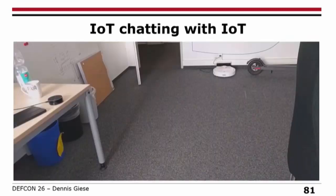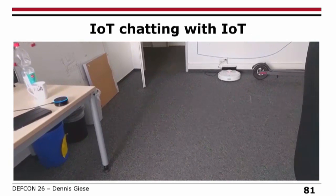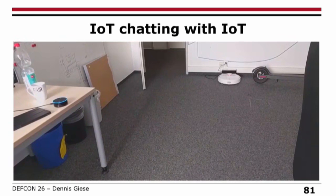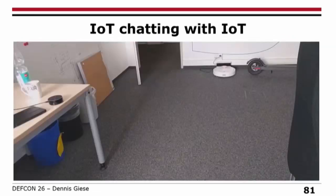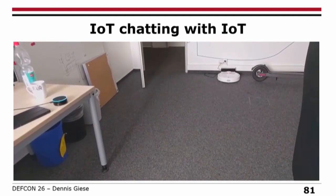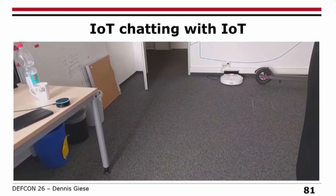The last example is a demo I wanted to do live, but I can't connect the vacuum cleaner to the Wi-Fi here, so here's a video. IoT can chat with IoT devices — on the left is Amazon Echo, on the right is the vacuum cleaner. You can see a speaker that drives around in your apartment and speaks to your IoT devices. Currently in Boston it's 21 degrees Celsius with mostly sunny skies.